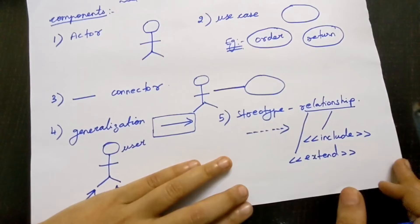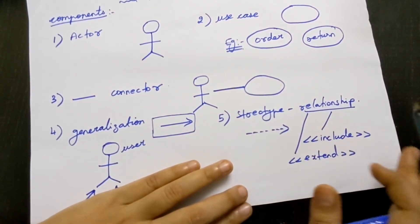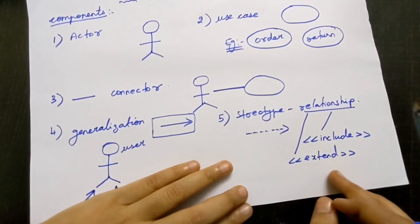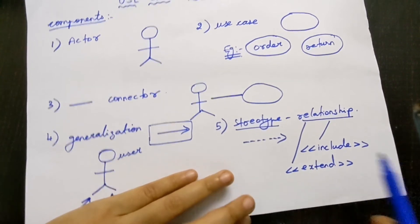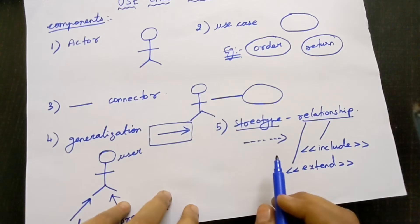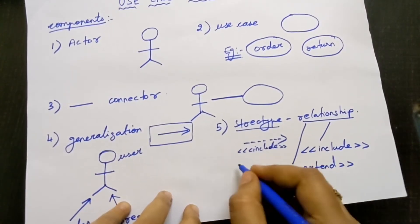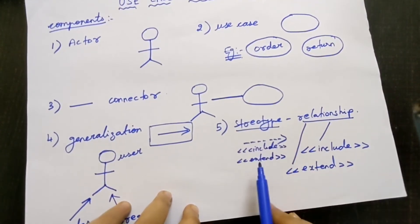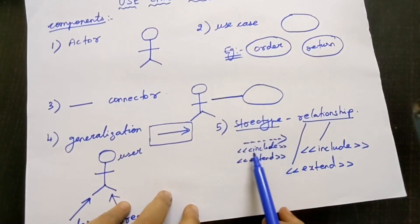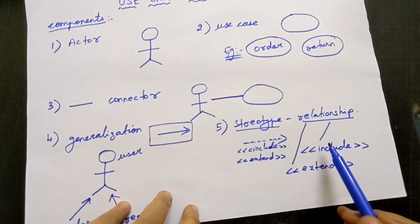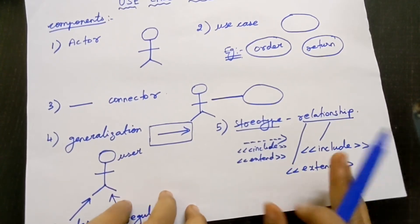Include is necessary — you must do it to perform the next step. Extend is not compulsory — you can do it if you wish. After drawing the dotted arrow, write 'include' below it for mandatory actions and 'extend' for optional ones. These are the five components.